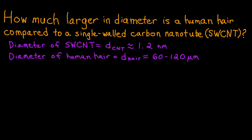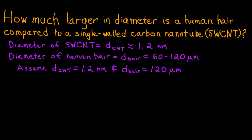Going back to our question, we know that a single-walled carbon nanotube has a diameter of about 1.2 nanometers. The diameter of a human hair varies more, but it is usually in the range of 60 to 120 micrometers in diameter. For this example, we will assume that the diameter of a nanotube is 1.2 nanometers, and that the diameter of a human hair is 120 micrometers. The first calculation to perform is to match the units for the two diameters. We could convert the diameter of the nanotube from nanometers to micrometers, or we could convert the diameter of hair from micrometers to nanometers. In this case, the latter conversion is a little easier because we won't end up with a lot of decimal points.